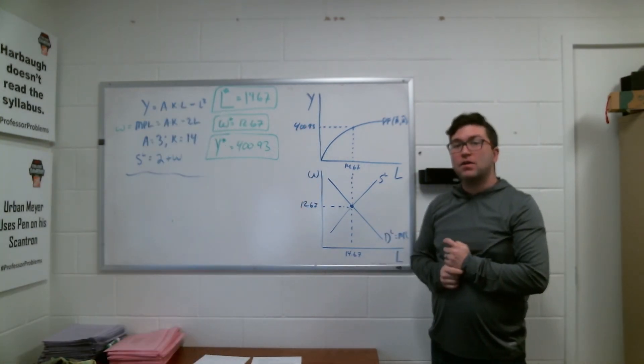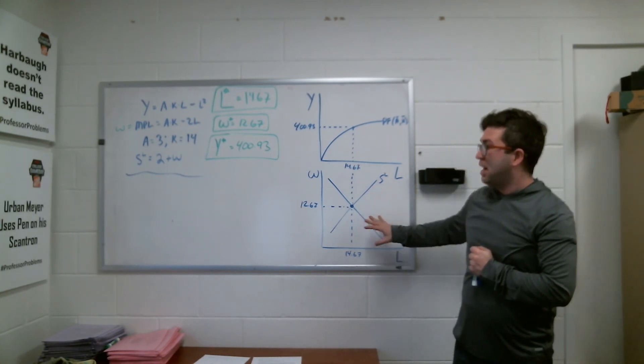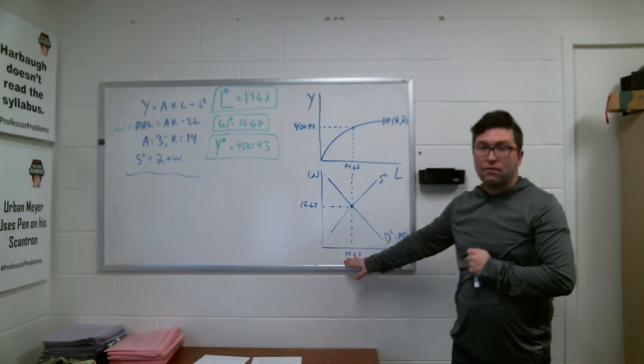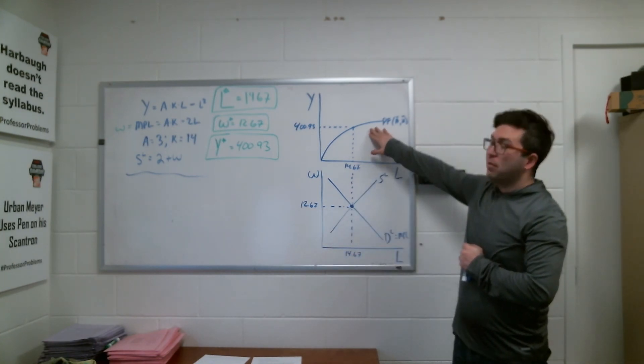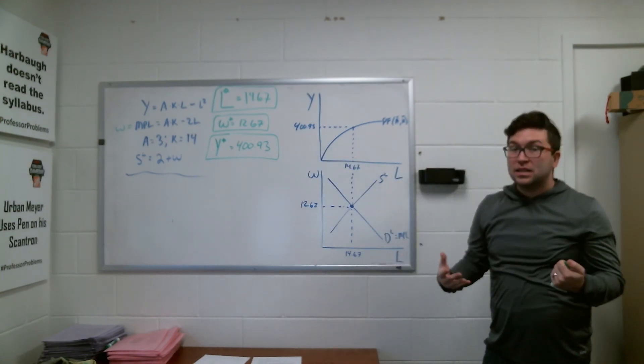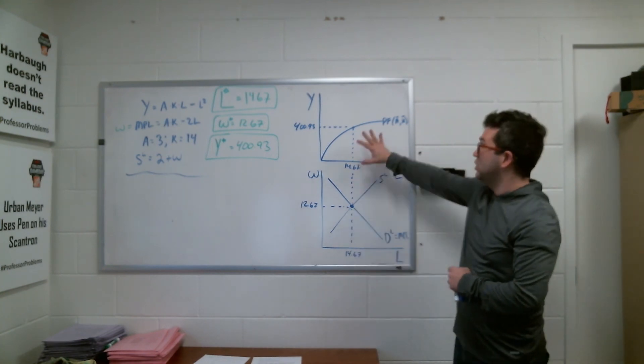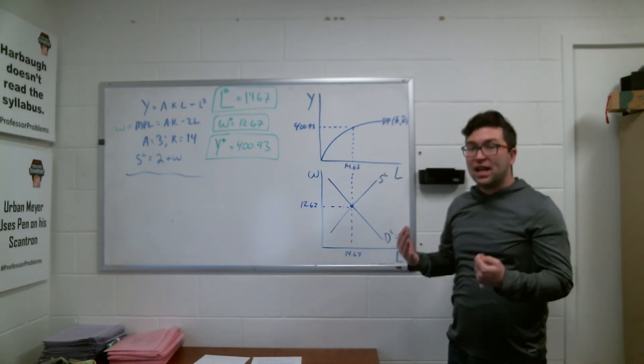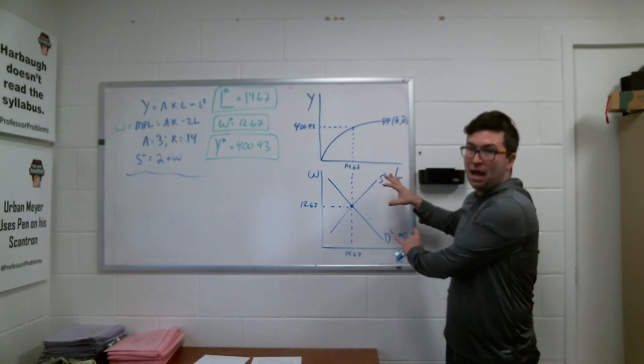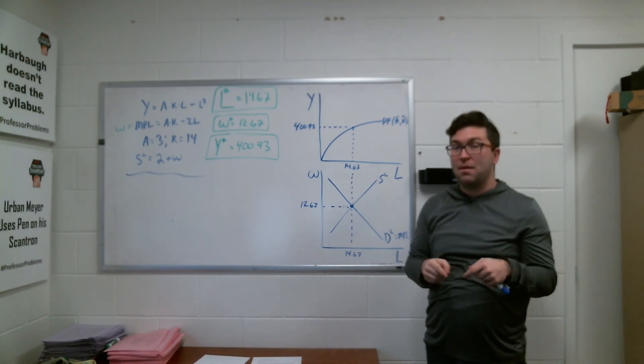So there you have it. A very straightforward example of how you use the labor market to find a wage that clears the labor market. We get a single level of labor. Plug that back into my production function to find my full employment level of output. Next step would be to have some sort of change. Maybe a shift in demand, a shift in supply, a shift in the production function, and then recalculating things and talking about policies that could make those shifts happen. Make sure you're studying for your exam. And if you have any questions, feel free to post them in the comments or shoot me an email.